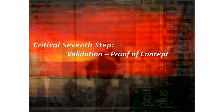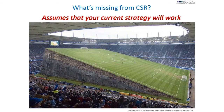We then have validation and proof of concept — essentially taking the CSR program and validating it, making it a viable program so we can ensure what we've committed to is actually working. This gets us into challenging our assumptions. When we look at CSR, we have to challenge the assumption that our current strategy is going to work — like a soccer team finding their strategy is no longer on an even field. We need to look at how our strategy needs to be adaptable to current and changing situations.